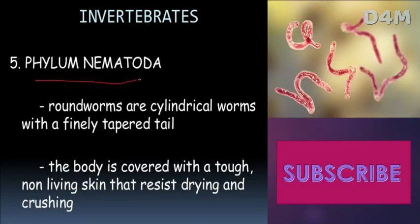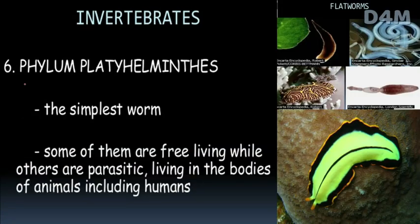Next is phylum Nematoda. They are roundworms — cylindrical worms with a tapered tail and a cylindrical shape. They are covered with a tough, non-living skin that resists drying and crushing.